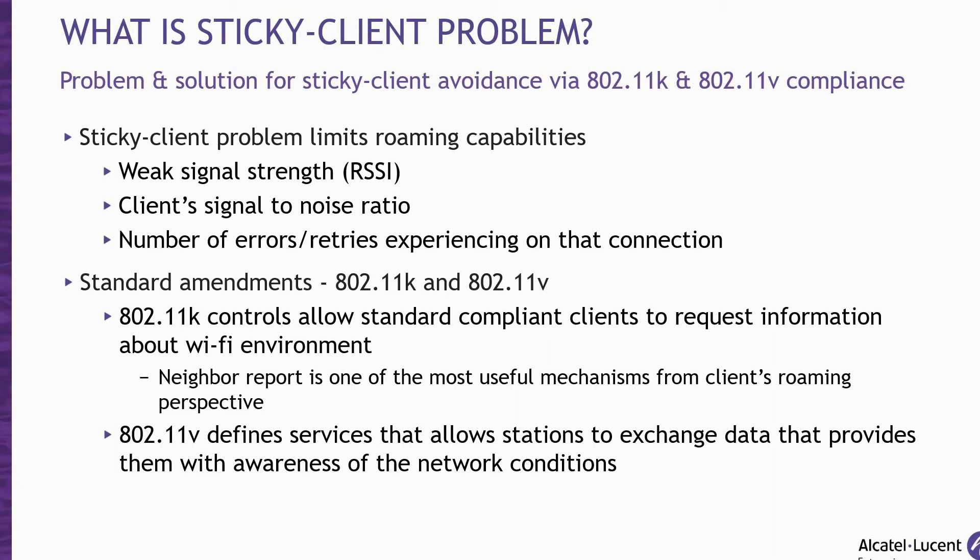The 802.11v standard defines mechanisms for wireless network management enhancements and BSS transition management. It allows client devices to exchange information about the network topology and RF environment. One of these mechanisms is BSS transition management, which allows an access point to request that a client roam to a specific AP, providing the client with better data to improve roaming decisions. It is recommended for these controls to always be enabled. In today's environments, a larger percentage of Wi-Fi devices support these standards. However, for those legacy devices that don't support these standards, they will have to rely on the roaming RSSI threshold settings at the RF profile level for roaming decisions from the AP side.